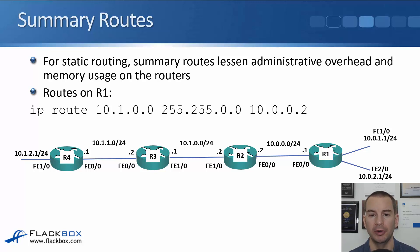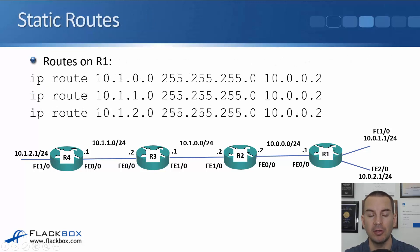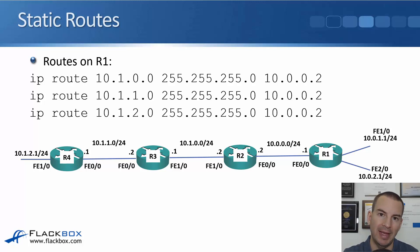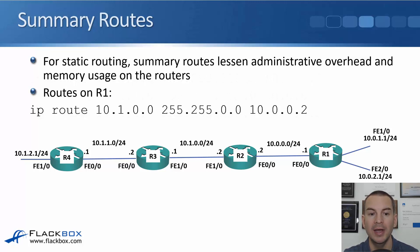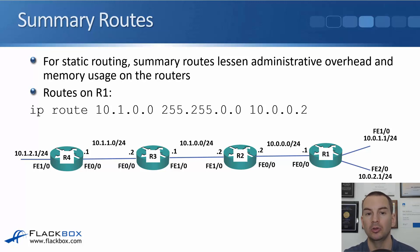The way we do the summary is on R1: rather than having separate routes for the 10.1.0, 10.1.1, and 10.1.2 networks — all pointing at the same next hop — when subnets are in contiguous ranges like this, following on one from the other, it's usually possible to summarize them. So rather than separate /24 routes, I've configured one route for 10.1.0.0 with a subnet mask of 255.255.0.0. This route covers all subnets that begin with 10.1 — 10.1.0, 10.1.1, 10.1.2, etc. — all reachable through 10.0.0.2.